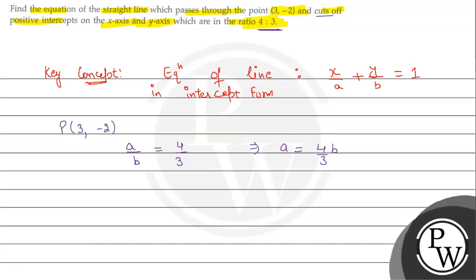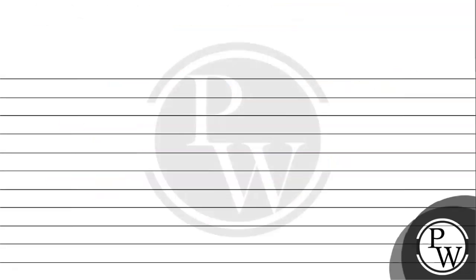We have passing point (3, -2). We put these values into the equation of line. Substituting point and a values: x = 3, y = -2, so it is 3/a + (-2)/b = 1. Now, a = (4/3)b, so it becomes 3/(4/3 · b) - 2/b = 1, which gives 9/(4b) - 2/b = 1.